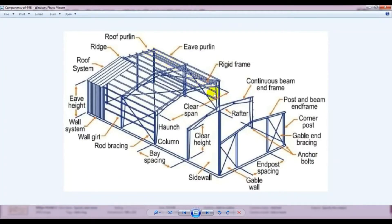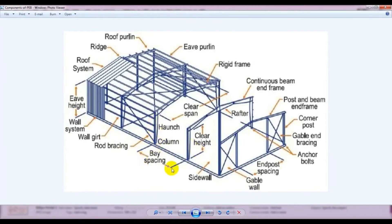Here is the purlin — that horizontal steel element that supports our shed is known as the purlin or roof purlin. From our floor level to the column height, that is known as the eave height. It is an important term you should know. From one column to another column, that distance is known as bay spacing.